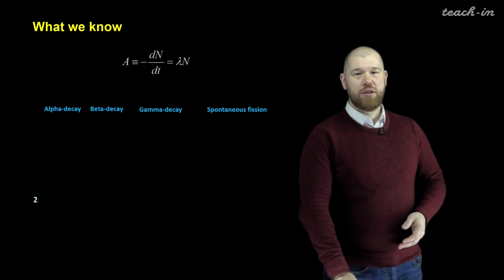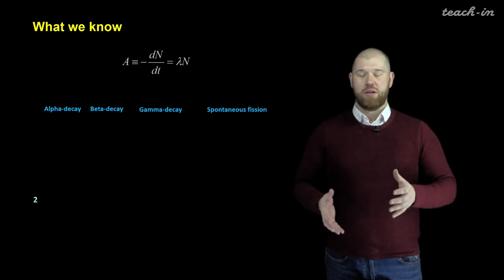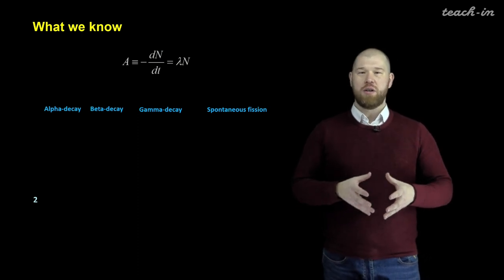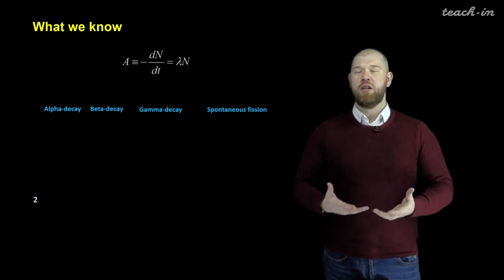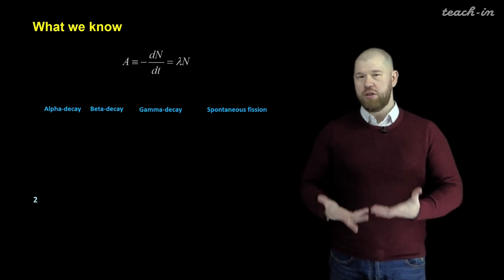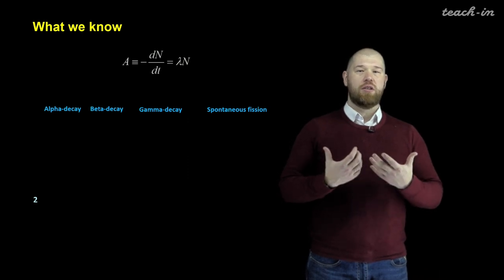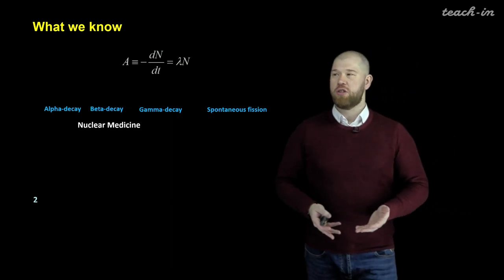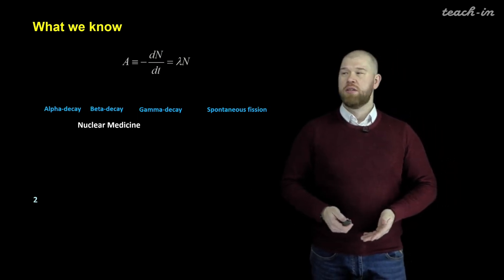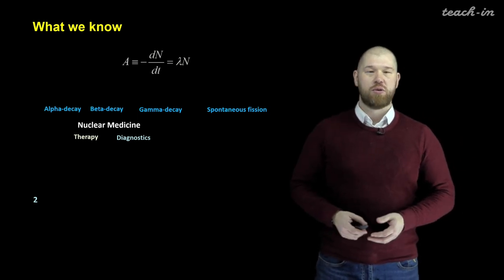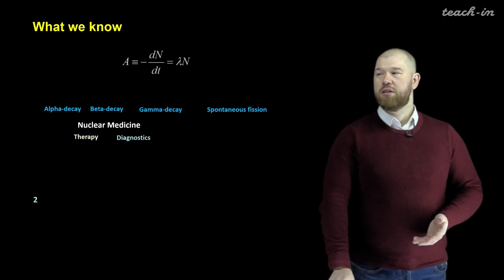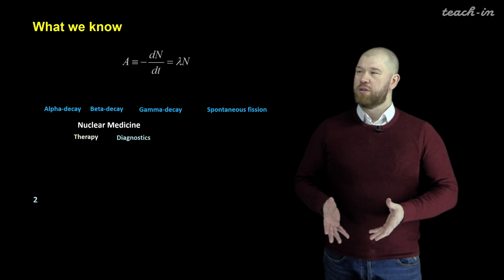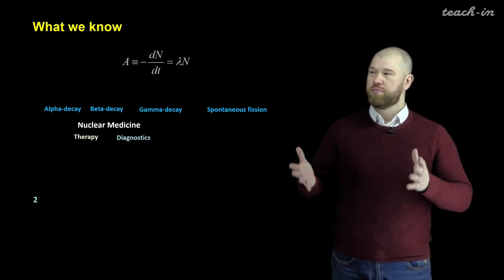We know the consequences of these processes — how the composition of the nucleus changes, how the chemical composition of our material changes due to radioactive decay, and due to the different properties of the released ionizing radiation. We can use alpha, beta, and gamma emitters in different applications including nuclear medicine. Alpha and beta emitters can be used for therapy, and gamma emitters and some beta-plus emitters can be used for diagnostics.